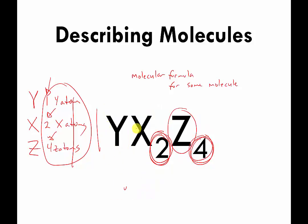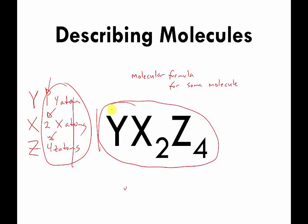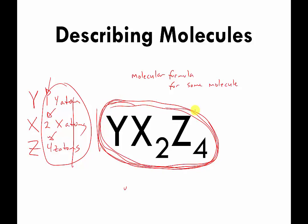So there's one Y atom, two X atoms, and four Z atoms all stuck to each other in this molecule. This is called a molecular formula. It does not tell you the order or how the atoms are attached to each other — all it tells you is the different types of atoms and how many of each type exist.